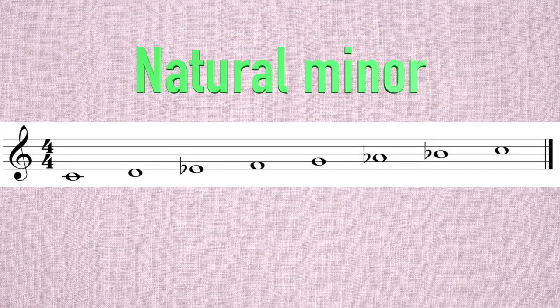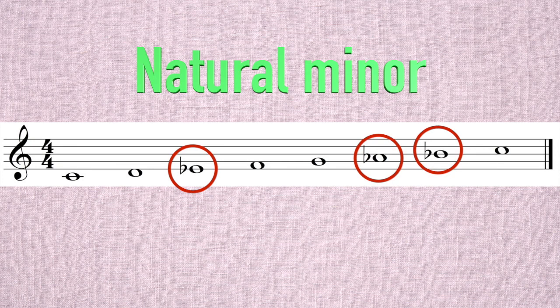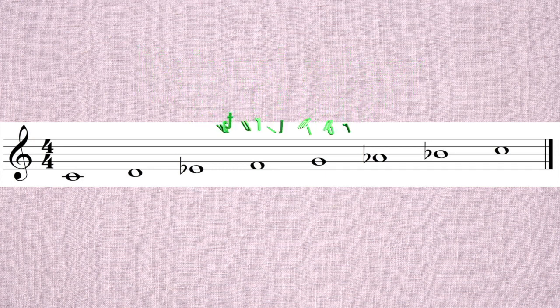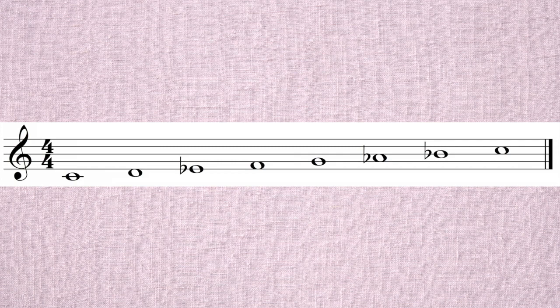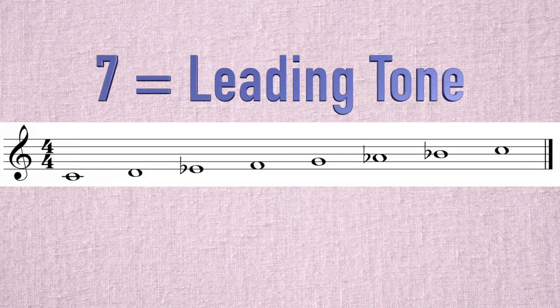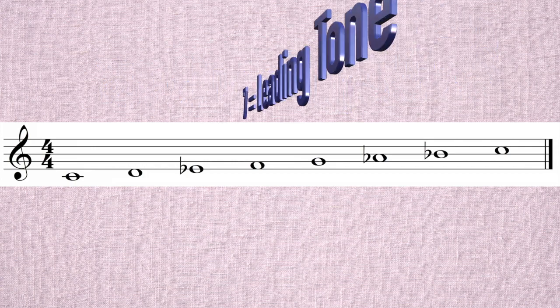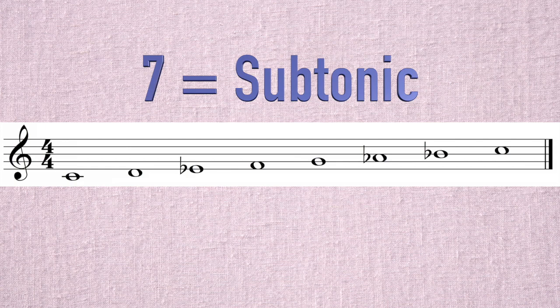The next kind of scale we're going to talk about is the minor scale. The minor scale starts much like the major scale — one of each letter name — but the pattern of half steps and whole steps is a little different. To convert a major scale to a minor scale, you take the third (the mediant), the sixth (the submediant), and the seventh (the leading tone) and lower each of those steps by a half step. That gives us the C natural minor scale. When the seventh step is more than a half step from the tonic, we no longer call it the leading tone — we call it the subtonic, or below the tonic.